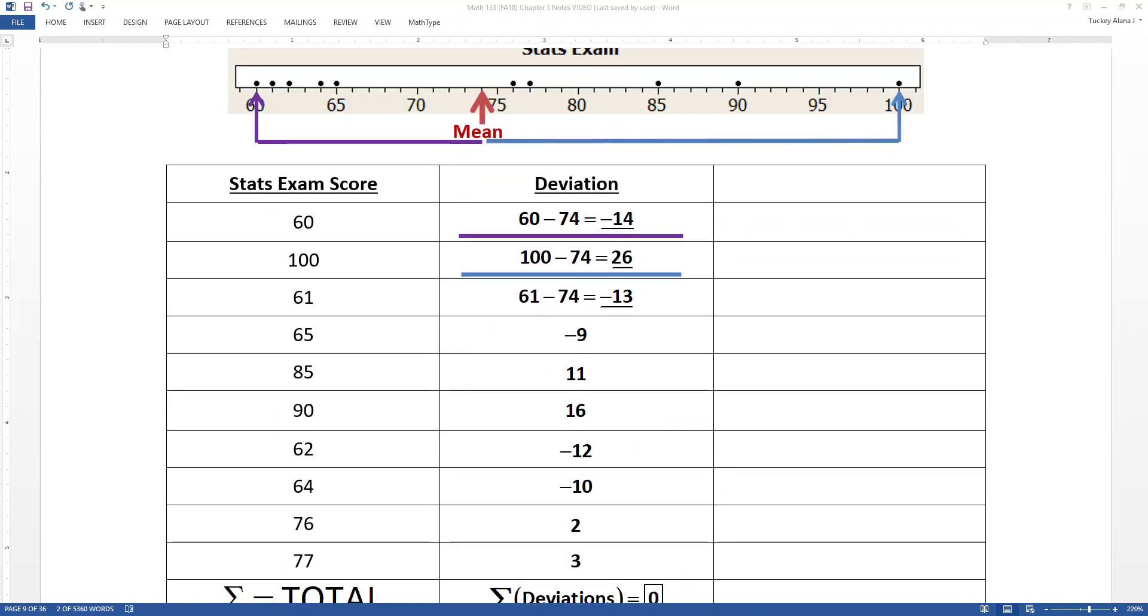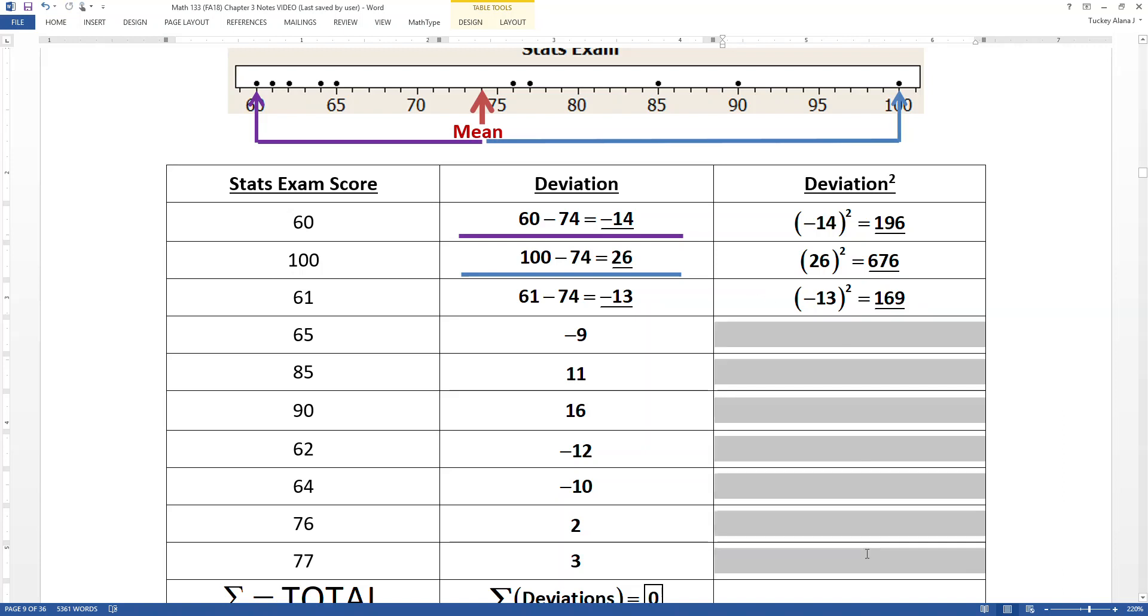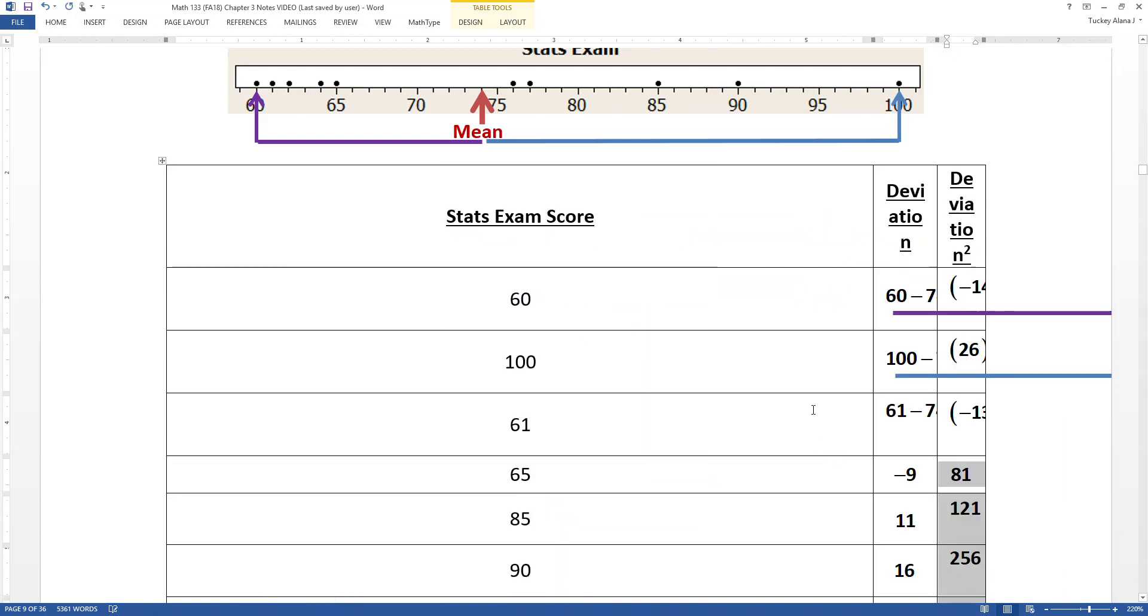I'm going to take my deviations and square them. Crafty, huh? Because it's going to turn negative values positive. So I take negative 14, I square it, it turns into positive 196. I take 26, I square it—well that's obvious, it's 676, because 26 squared is already positive. If I take negative 13, negative 13 times negative 13 is positive 169. So you can see what's happening. All the negative values will turn positive and all the positive values will stay positive. The rest of them you might know from your times tables. Those are the only ones that might have given you a little bit of grief.